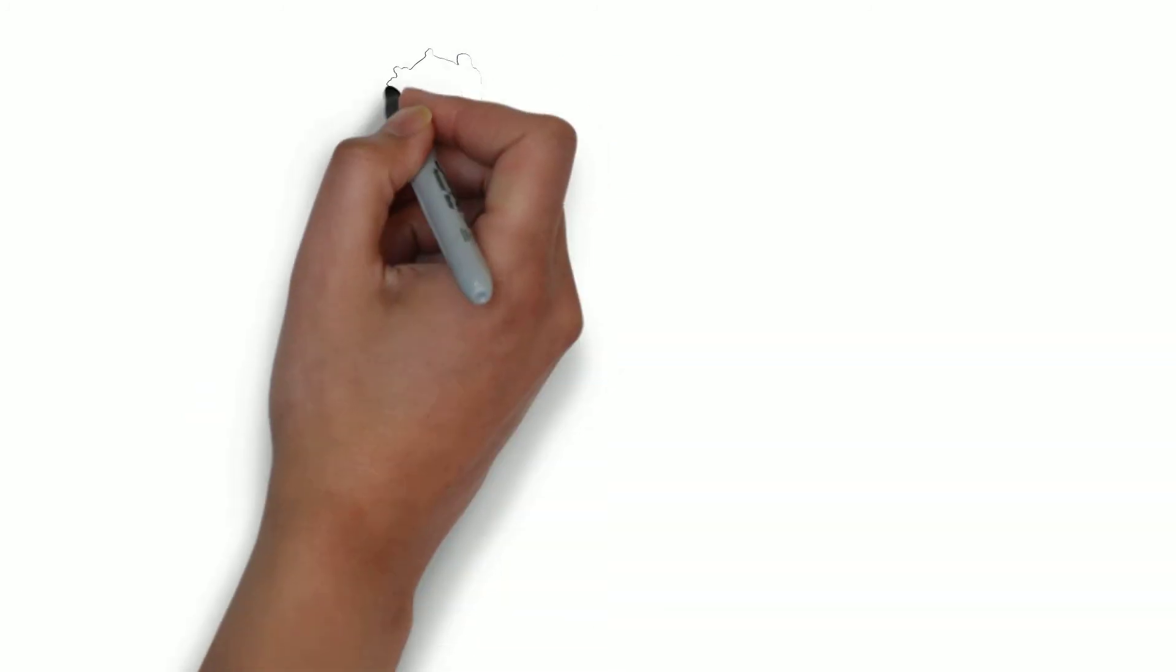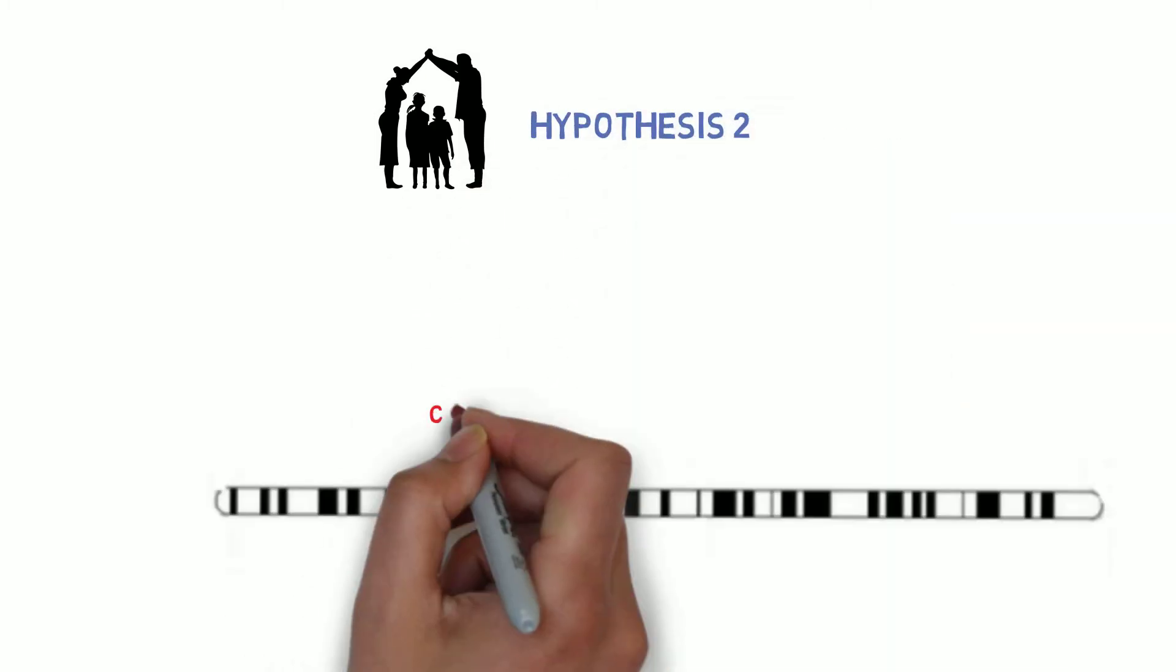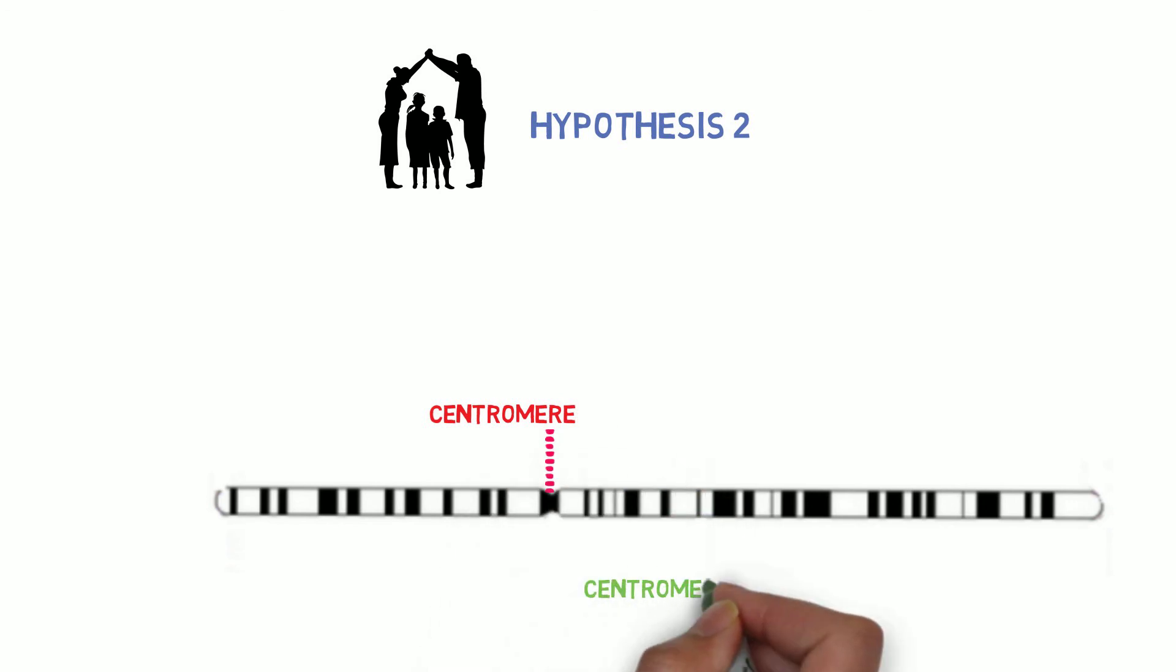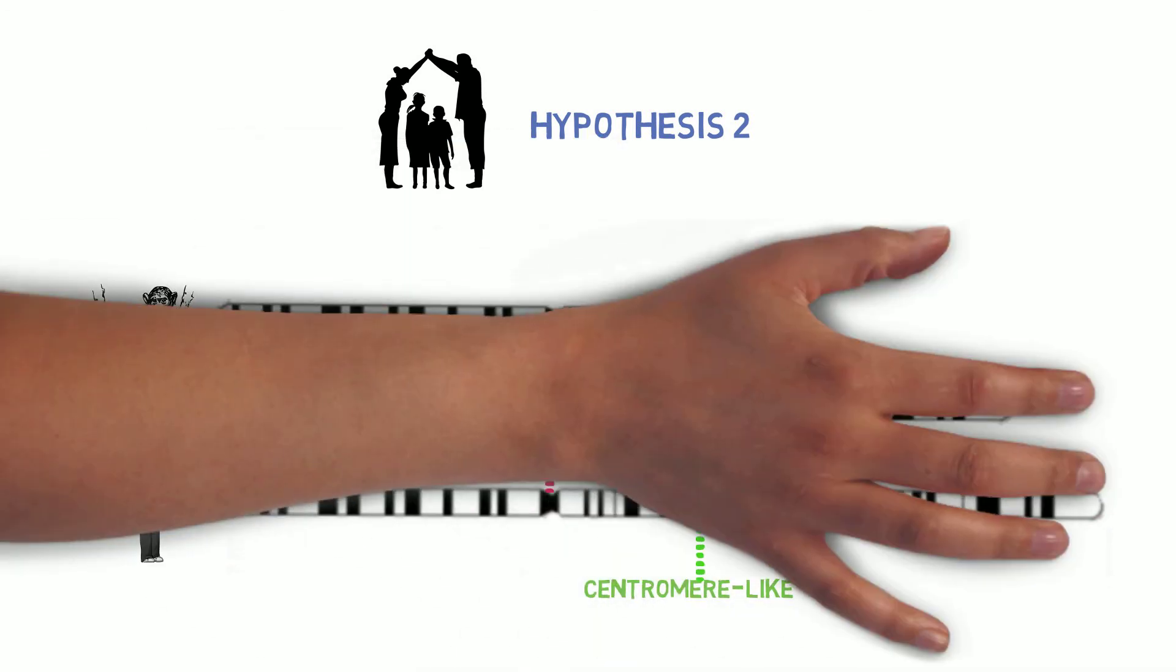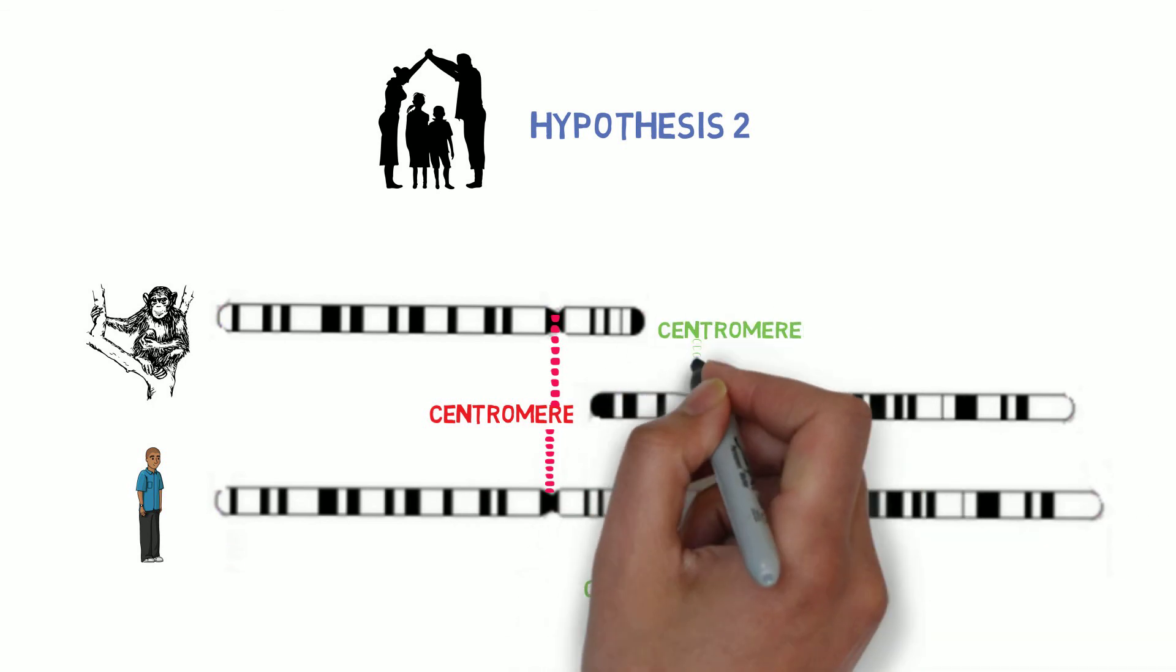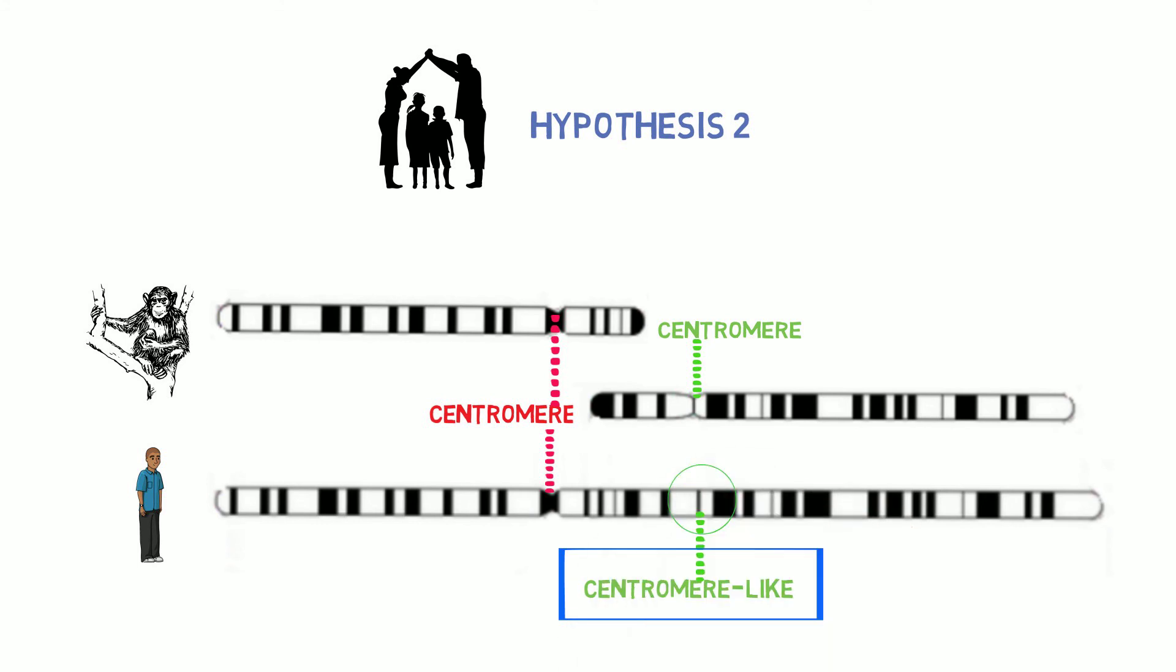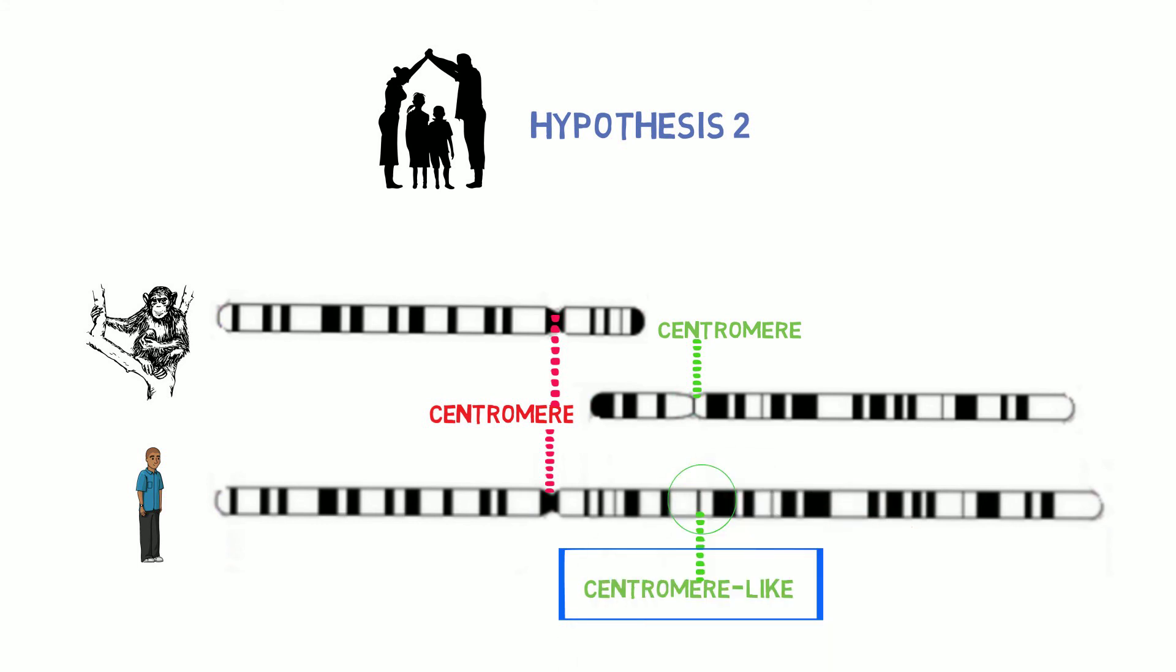Hypothesis number two also predicts that the newly fused chromosome would have two centromeres, each at the exact same location at which there is a centromere in the two chimpanzee chromosomes. That's exactly what is found. One of those centromeres is degraded, but one can look at the code at the precise location where there is a centromere in chimps and can see that the relics of an old centromere are present. With the other position, on the other hand, in humans, there is a fully functional, normal centromere.